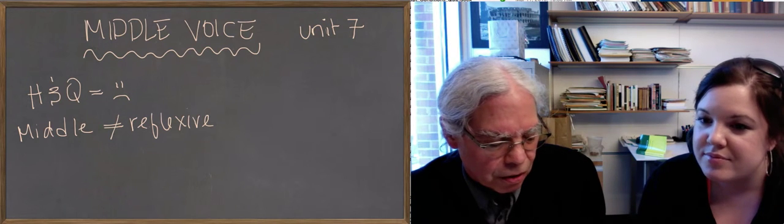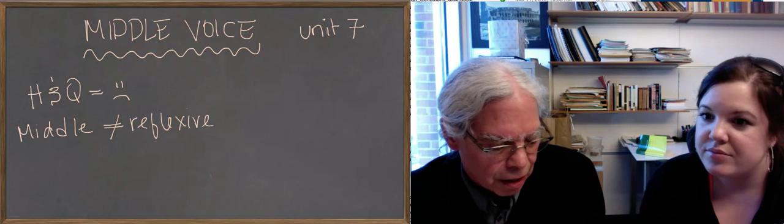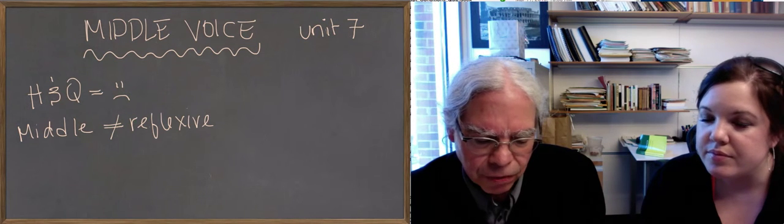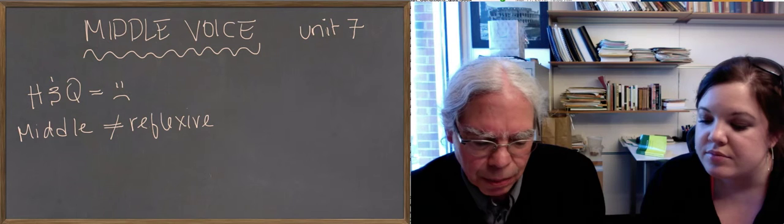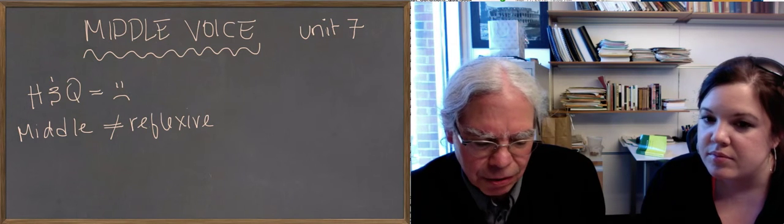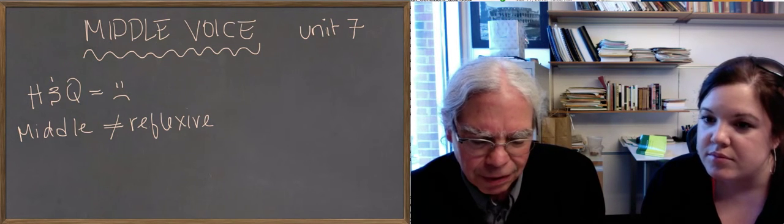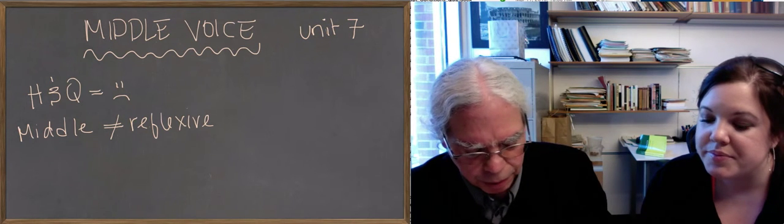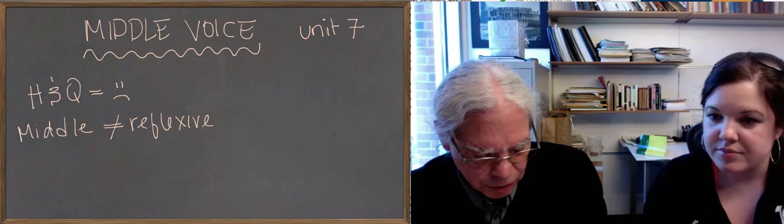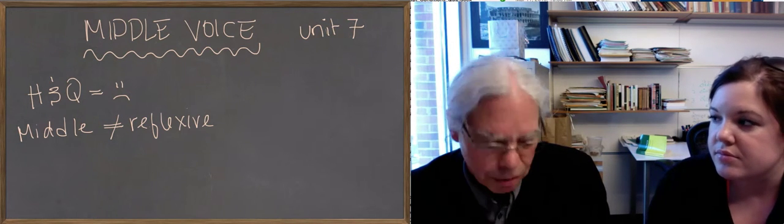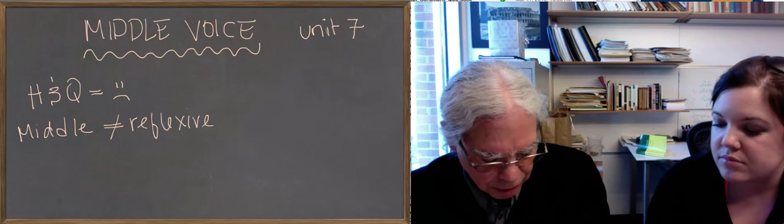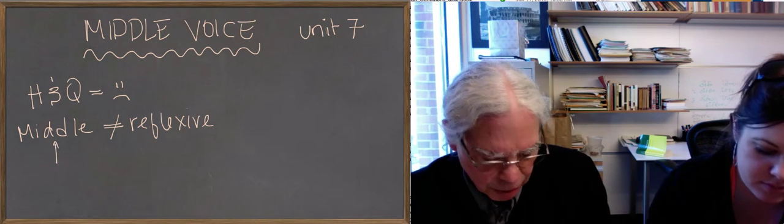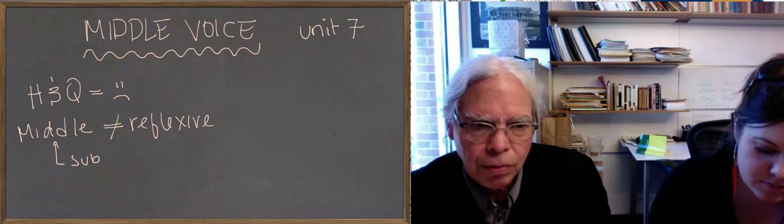So here's the list again: to be, to flow, to creep, to bend, to blow, to eat, to drink, and to give. Whereas a middle process is one which takes place entirely within the subject in which the subject is interior to the process. So we're not talking about reflexiveness, we're talking about how the subject is involved in the way the process works.